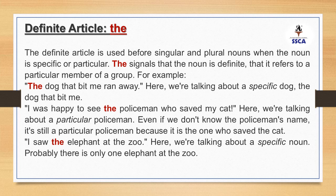In example number three, 'I saw the elephant at the zoo' — here we are talking about a particular elephant. This is a specific noun; we are not talking about any elephant. Maybe there is only one elephant at the zoo, so we are talking about that one elephant which is particular. That's why we use 'the'. Now let's take some more examples to understand the uses of the definite article.